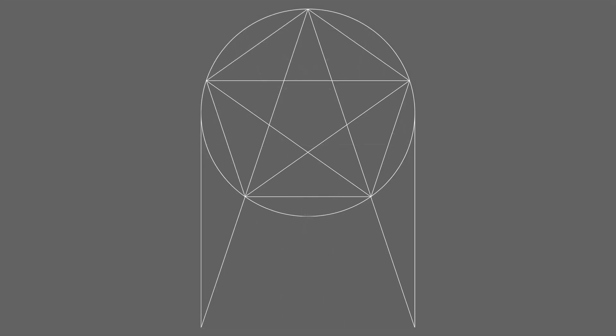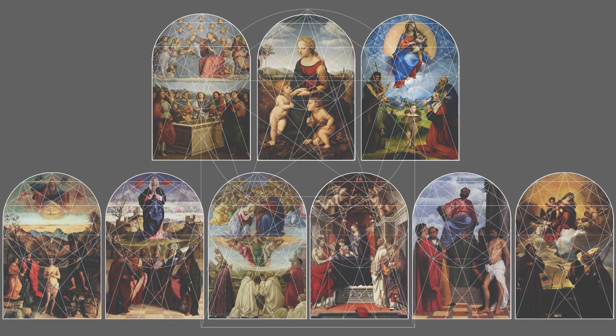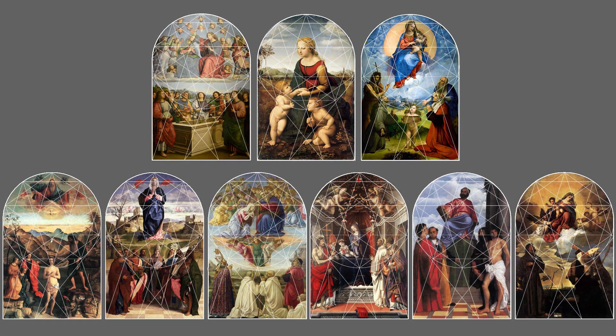In its simplest form, it's just a pentagon, pentagram, and circle, with the sides of the pentagram extended down until they meet vertical lines drawn at the sides of the circle. A horizontal line where they meet forms the bottom. It's easy to imagine early artists using this simple geometry for the proportions of cathedral-shaped paintings like these.